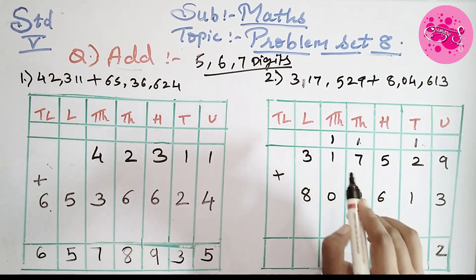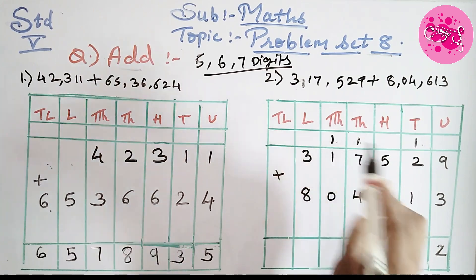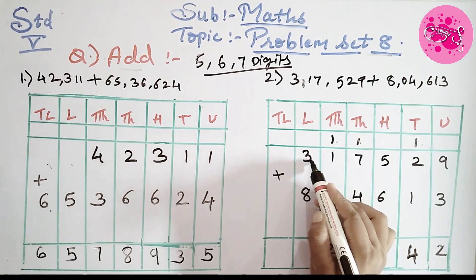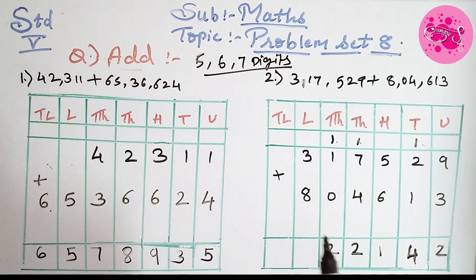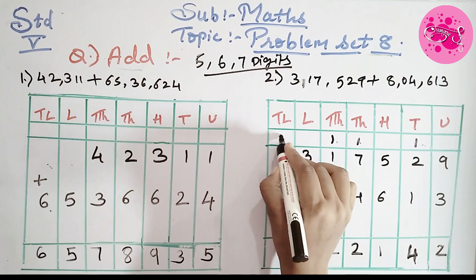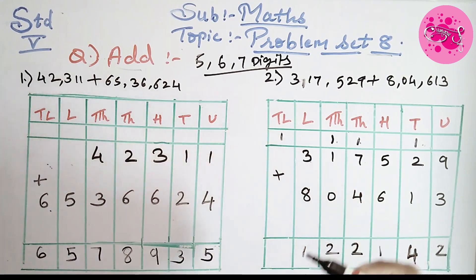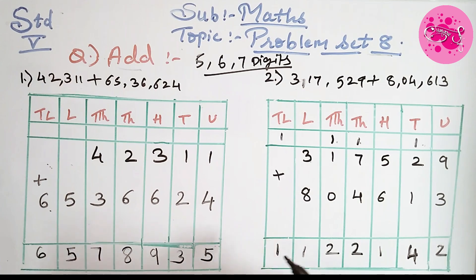Next, 0 plus 1 is 1, and the carried 1, so 1 plus 1 is 2. Write 2 below. Then next is 8 plus 3, we get 11. So write 1 here and carry 1. Now here there is no number, so write the carried 1 as it is. Another way is that if before any number there is nothing, then write the whole number directly, that is 11.